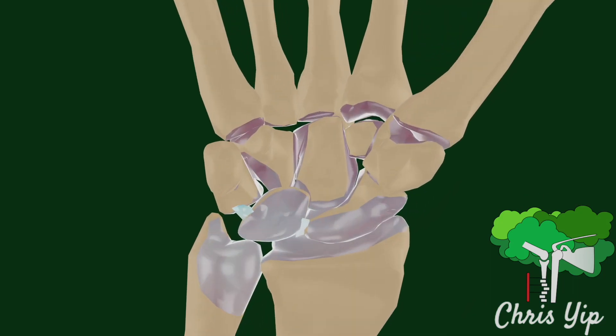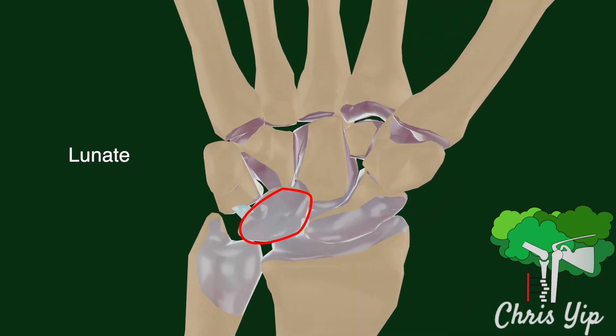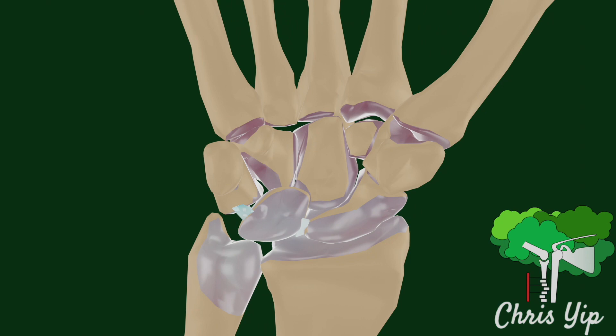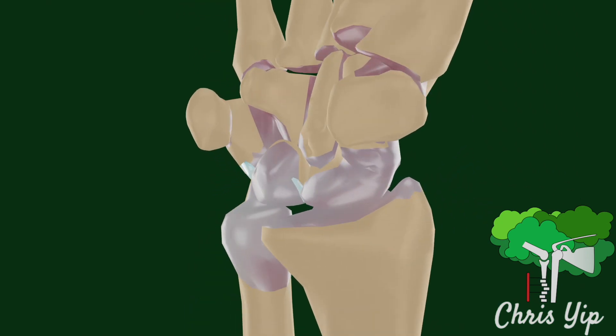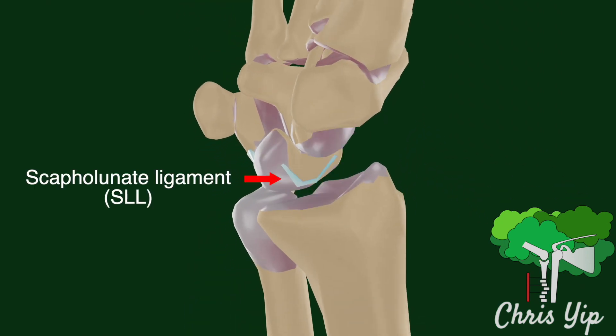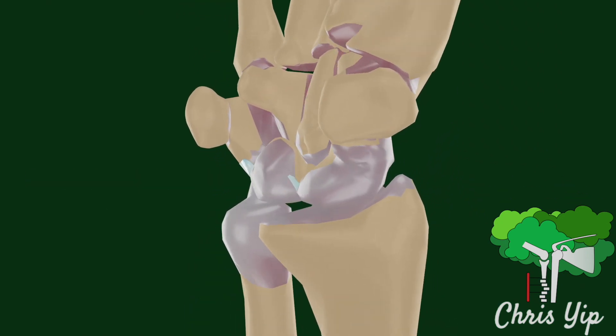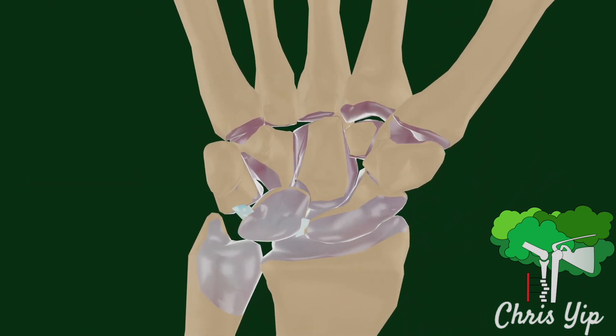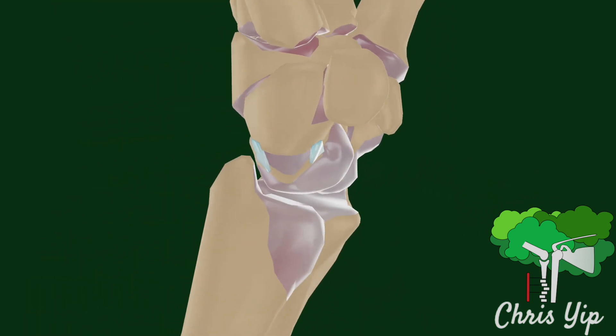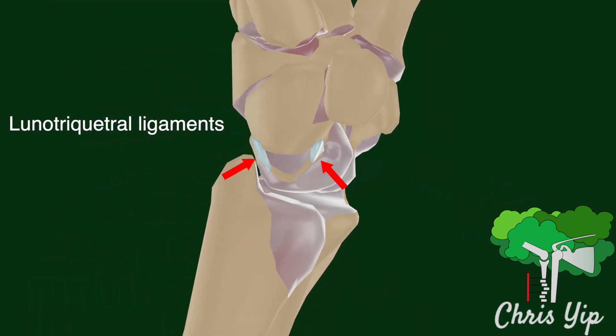The proximal row of the carpal bones are made up of the scaphoid, lunate, and triquetrum. The scaphoid and lunate are held together by a C-shaped scapholunate ligament, whilst the lunate and the triquetrum are held together by the lunotriquetral ligaments.